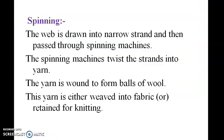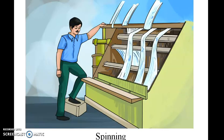The web is drawn into a narrow strip and then passed through a spinning machine. The spinning machine twists the strip into yarn. The yarn is wound to form balls of wool, and this yarn is either woven into fabric or knitted for clothing.